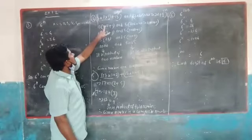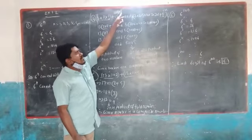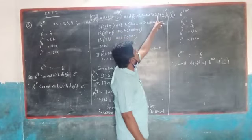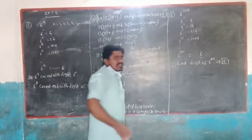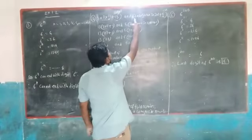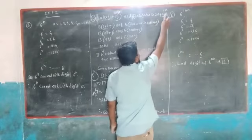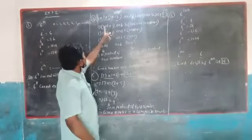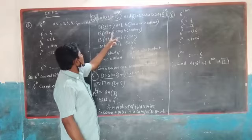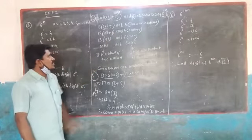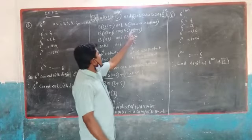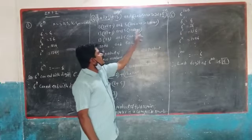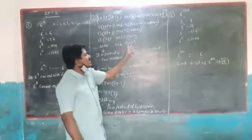So taking 13 as common, we get 13 into (7 into 11 plus 1). And for the second expression, 7 into 6 into 5 into 4 into 3 into 2 into 1 plus 5 — taking 5 as common, we get 5 into (7 into 6 into 4 into 3 into 2 into 1 plus 1). That gives 5 into 1009, which is 5045.